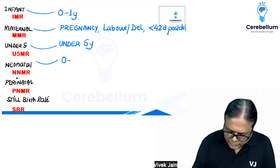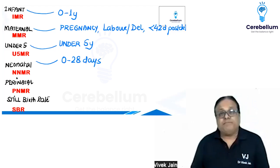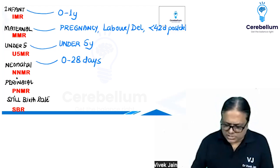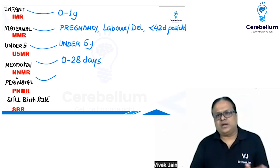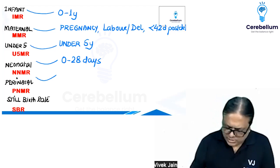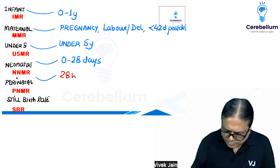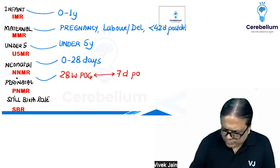What is the neonatal period, and what is the perinatal period? We discussed this on day one. Perinatal means around delivery — something before delivery and something after delivery. The perinatal period is from 28 weeks period of gestation till seven days post-delivery.